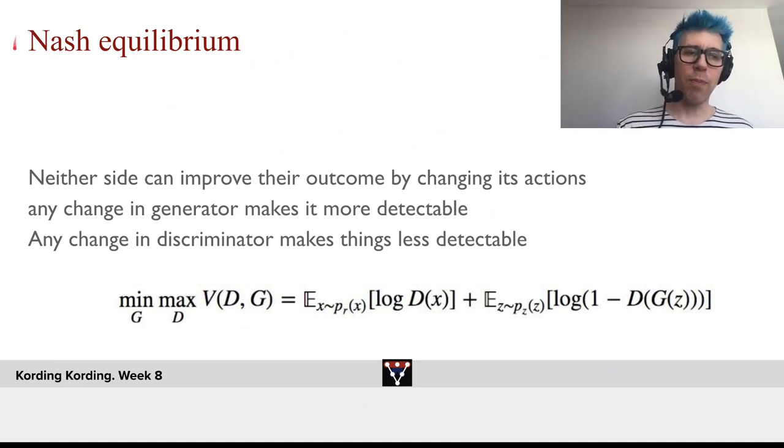Now, what is a Nash equilibrium? It's important in game theory. It's the situation where no one can improve the outcomes for them by doing anything differently.